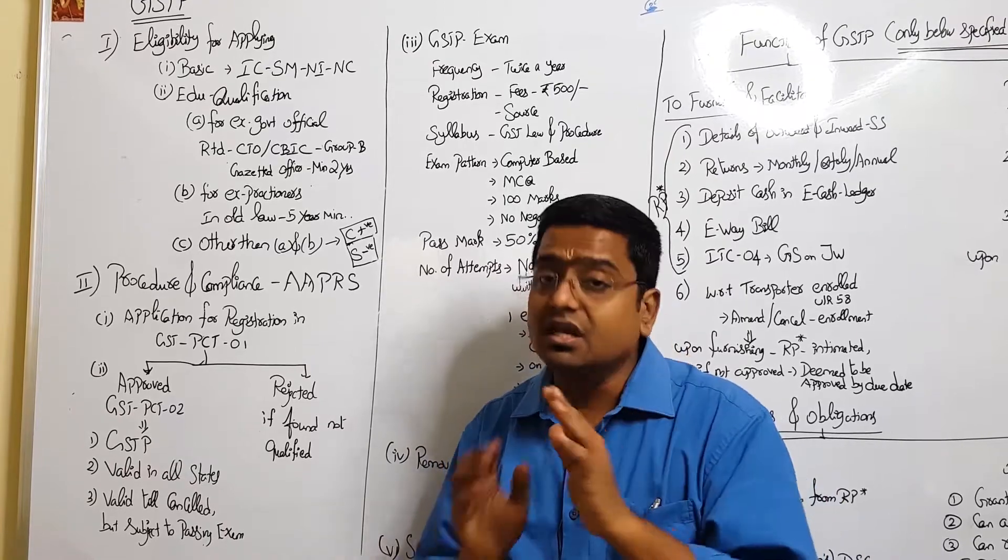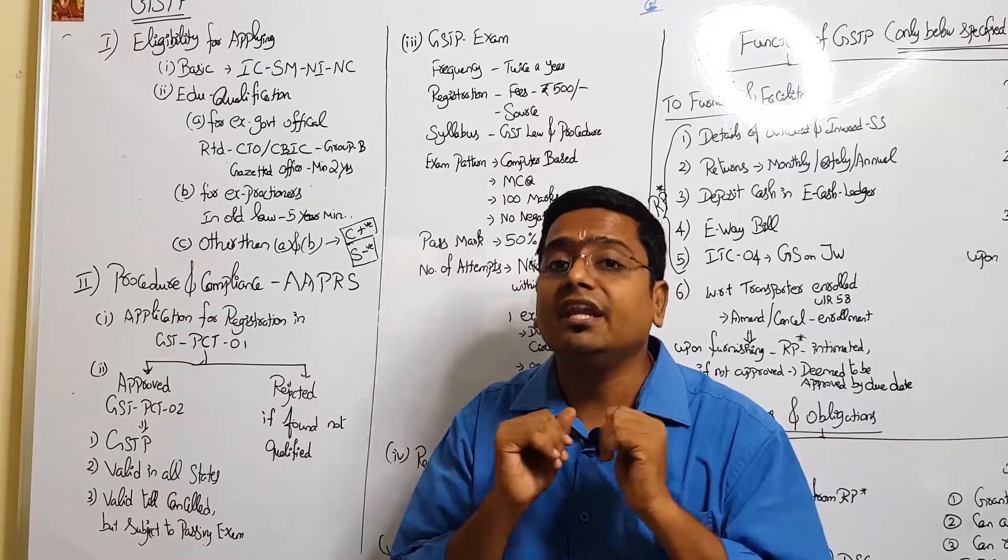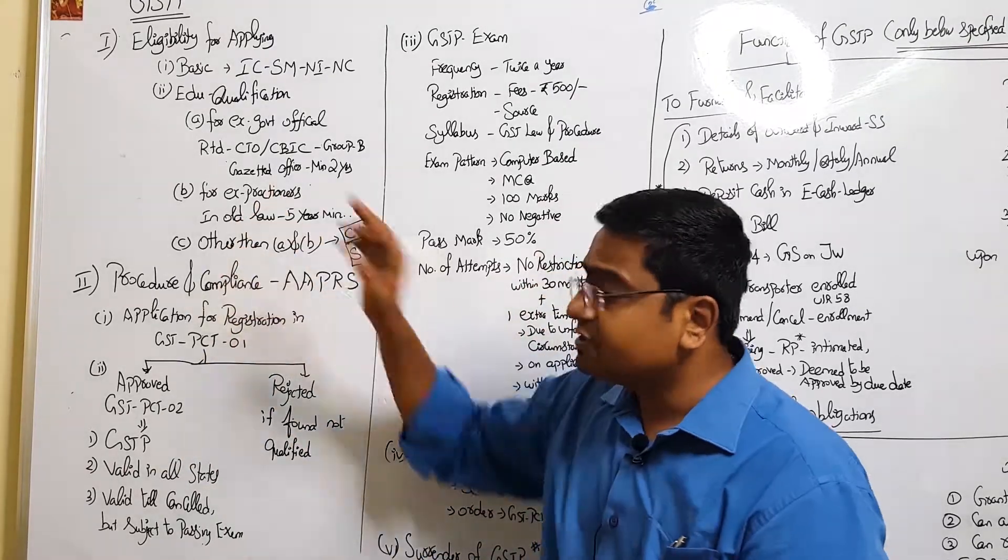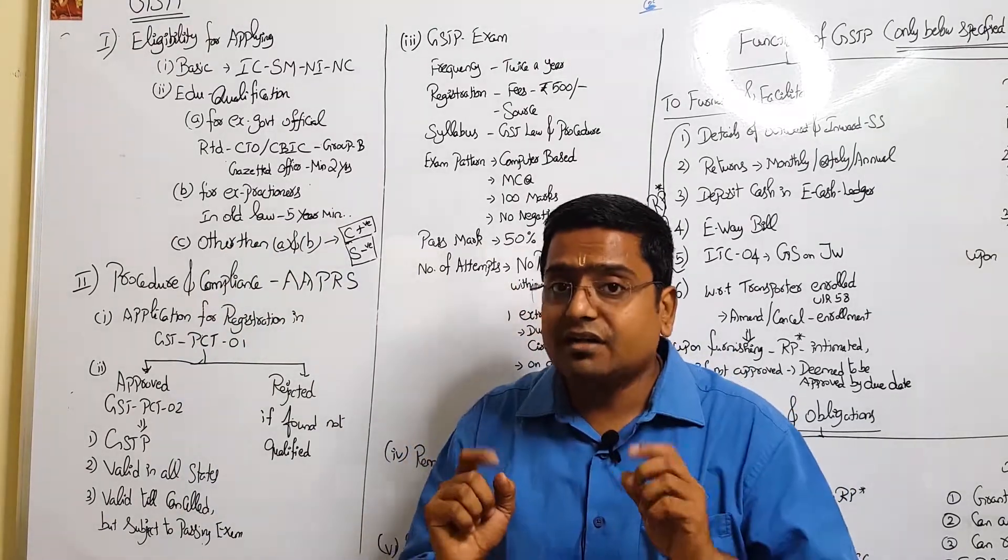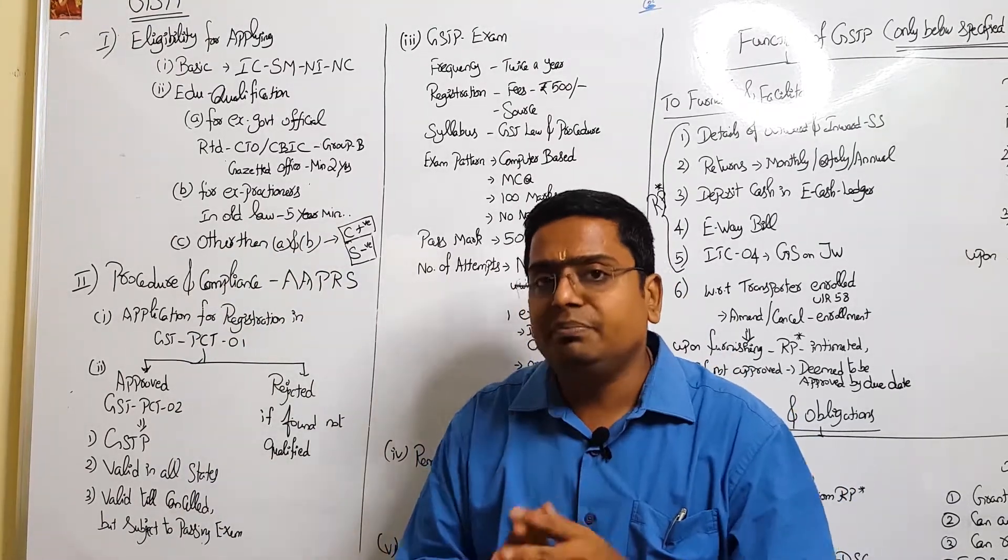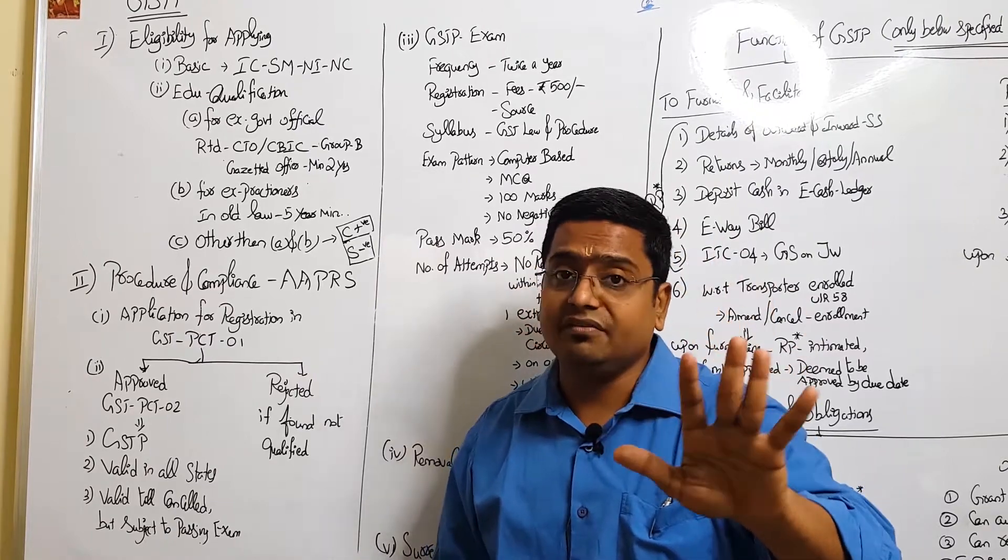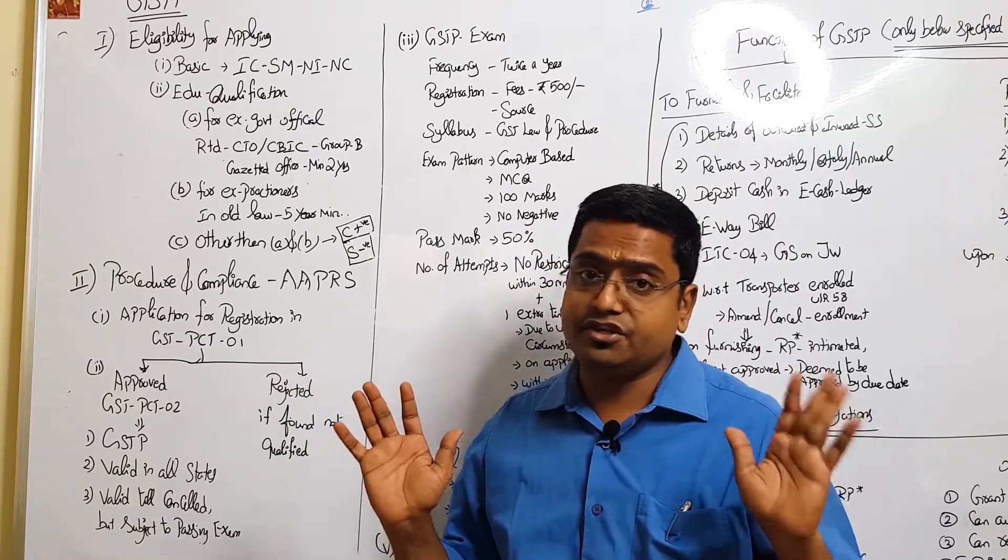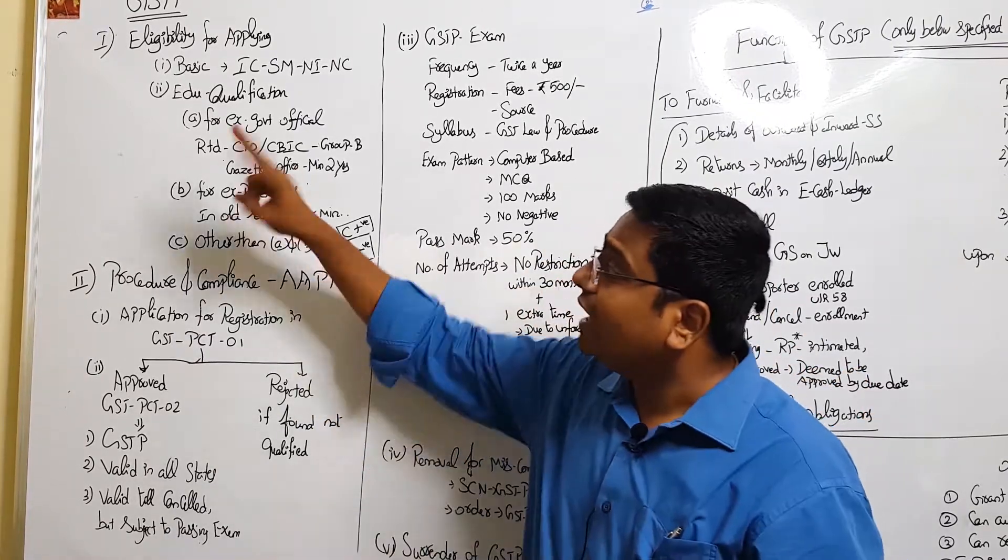A retired Commercial Tax Officer (CTO) or a retired CBIC officer who served as a Group B gazetted officer for a minimum period of two years is eligible without considering any education qualification. And ex-practitioner is concerned - whoever practiced in the old law for a minimum period of five years, not less than five years, is eligible without any education requirement.